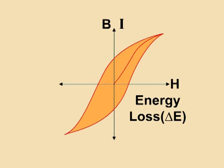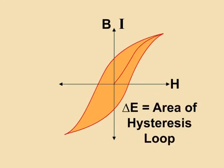It can be seen that the loss of energy per unit volume of specimen per cycle of magnetization in SI system is equal to the area of BH loop.